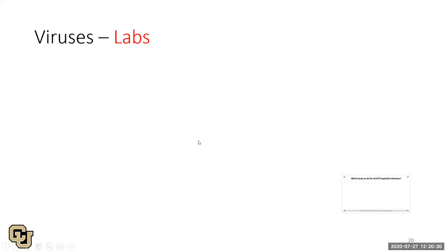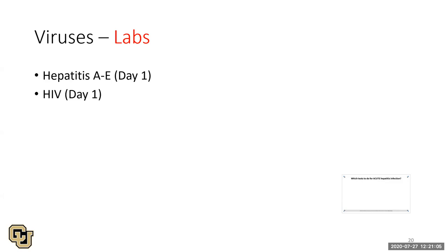Check all hepatitis and HIV on day one. On days two and three, if initial workup is negative, consider EBV, CMV, and the herpes viruses, which can also cause acute liver failure. For testing: order Hep B surface antigen, Hep A IgM, Hep C antibody and Hep C RNA level, Hep B core IgM antibody (specifically IgM for acute infection, not IgG), and HIV. We'll save interpretation of the full Hep B antibody/antigen panel for another time.